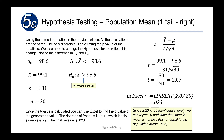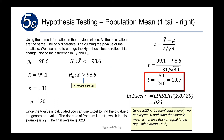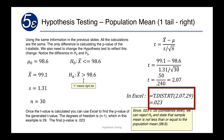Using the same data as before but with an altered hypothesis test: the null hypothesis is x-bar less than or equal to 98.6, and the alternative hypothesis is x-bar greater than 98.6. The greater-than sign means we're going to have a right-tail test. We calculate our t-statistic the same way and get 2.07. Using t.dist.rt with 2.07 and 29 degrees of freedom, we get a p-value of 0.023. Since 0.023 is less than 0.05, we reject the null hypothesis and state the sample mean is greater than 98.6.